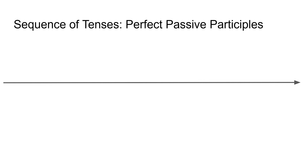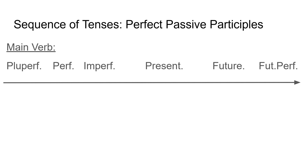Something important to remember when you're doing participles is something called the sequence of tenses. The main verb really dictates how to translate the participle. I have three categories of main verb: pluperfect, perfect, and imperfect — those are my past tenses. Then I have my present. And then I have my future and future perfect — those are my future tenses. Those three distinct categories dictate how to translate the perfect passive participle.